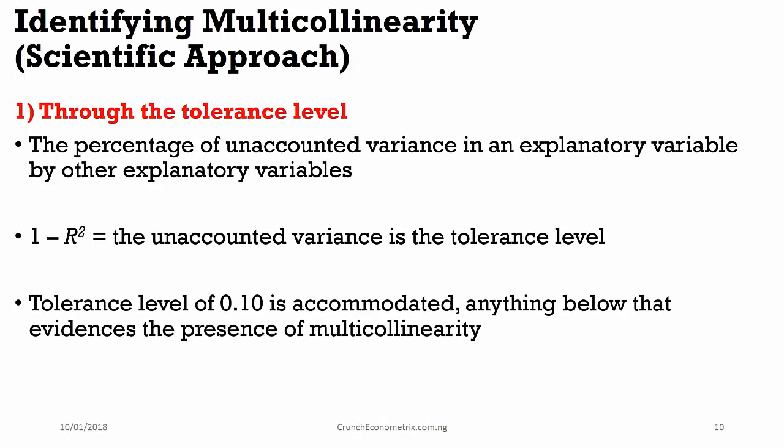The tolerance level of 0.10 is often accommodated. Anything below that evidences the presence of multicollinearity. Therefore, we can always say that tolerance levels above 0.10 are preferred. So, the lower the tolerance level that you have is evidence that this model is suffering from high multicollinearity.